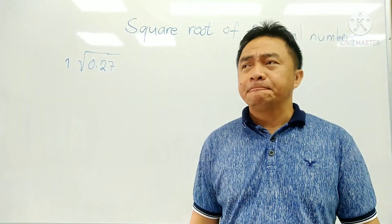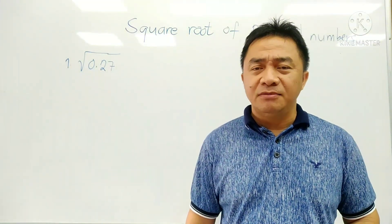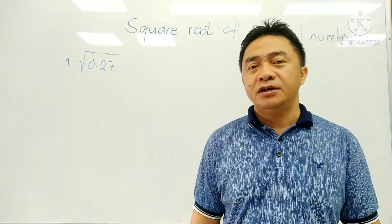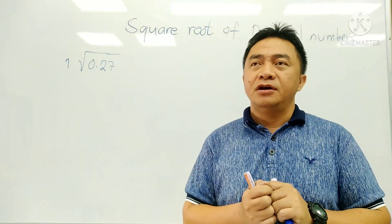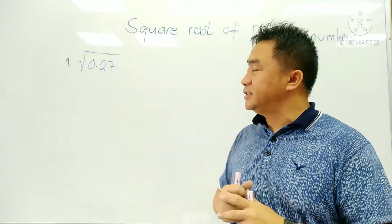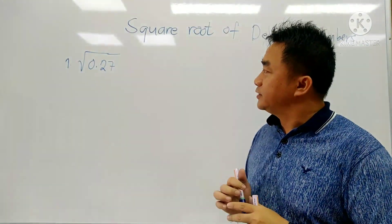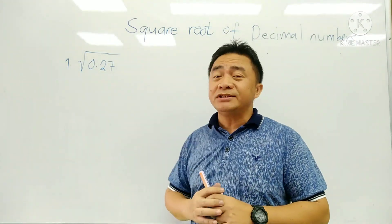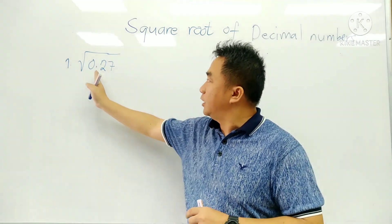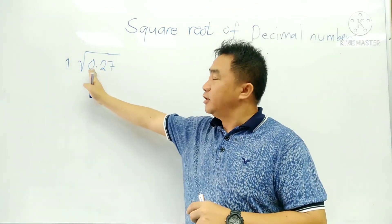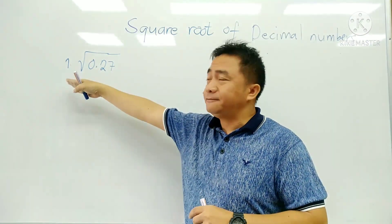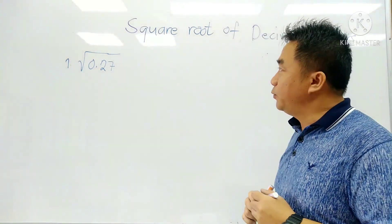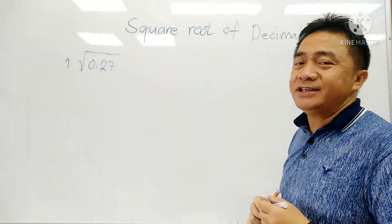Now again, the method is just the same as what we follow with the square root of non-perfect square — by pair. For this one, since this is a decimal number, for example, if we start with the square root of 0.27, you will go to the right because you don't have any number to the left — it's only 0. So we have here number 1, then we have the square root of 0.27.